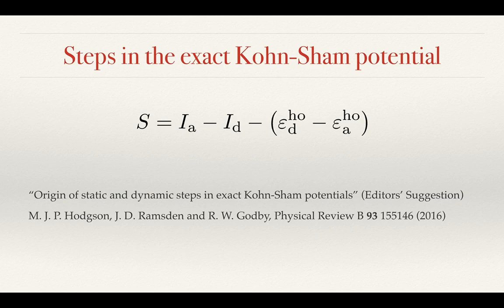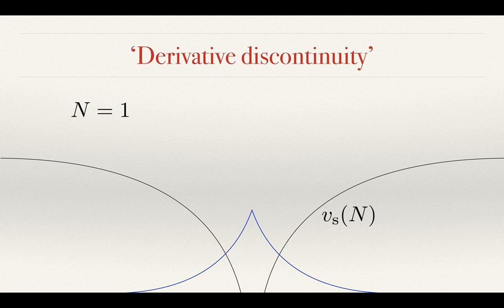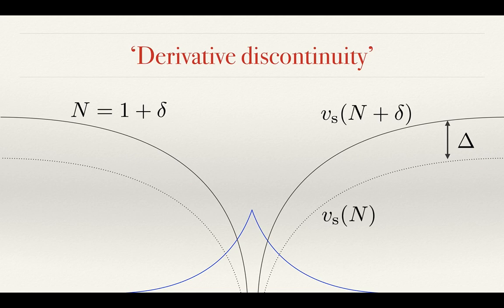Another seemingly unrelated property of the exact Kohn-Sham potential is known as the derivative discontinuity. Its name comes from the discontinuity in the derivative of the electron energy as the number of electrons in the system is varied. It manifests in the exact Kohn-Sham potential as follows: consider a single atom with only one electron. When we add a very small amount of charge to the system, the number of electrons surpasses an integer, which means the level of the Kohn-Sham potential jumps everywhere in the system by a constant, delta.